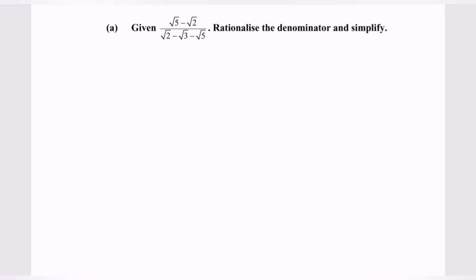Given the situation where we have square root of 5 minus square root of 2, over square root of 2 minus square root of 3 minus square root of 5, rationalize the denominator and simplify.